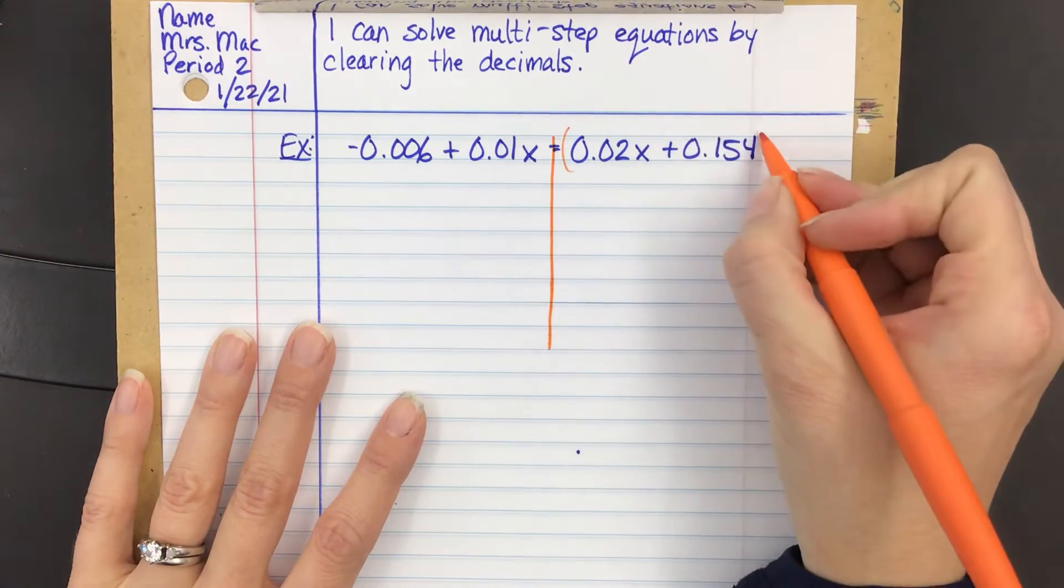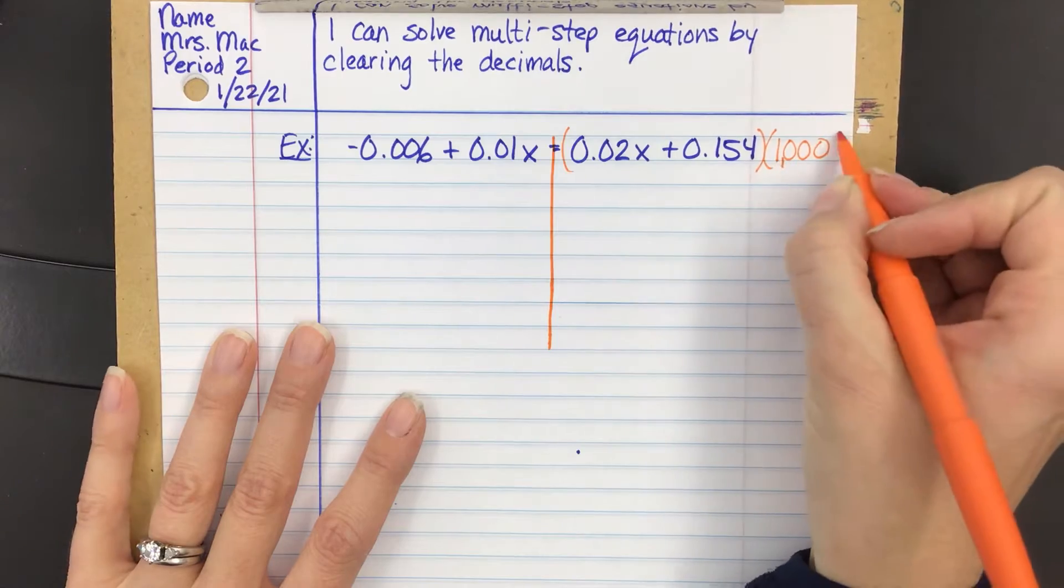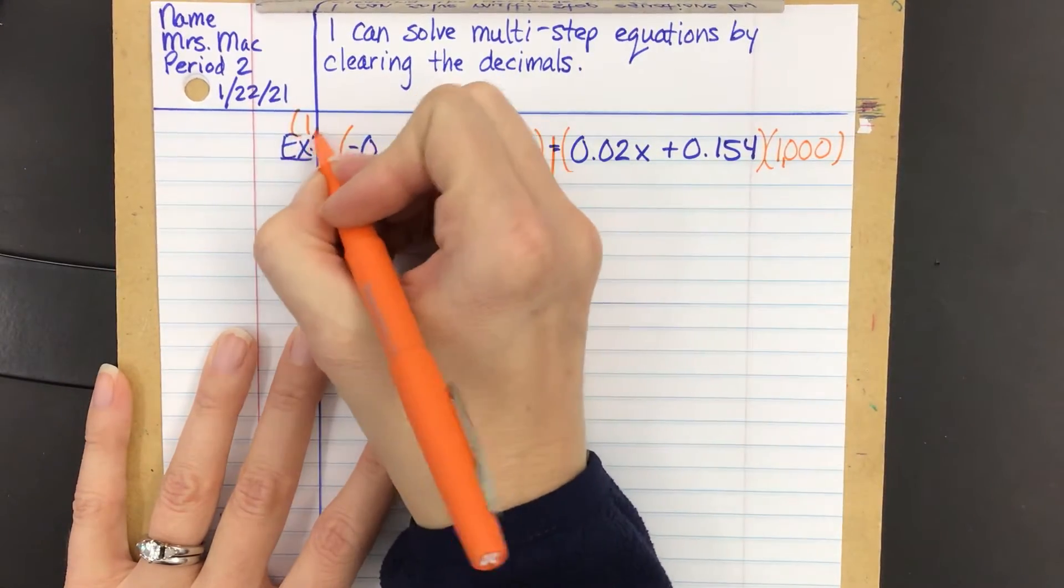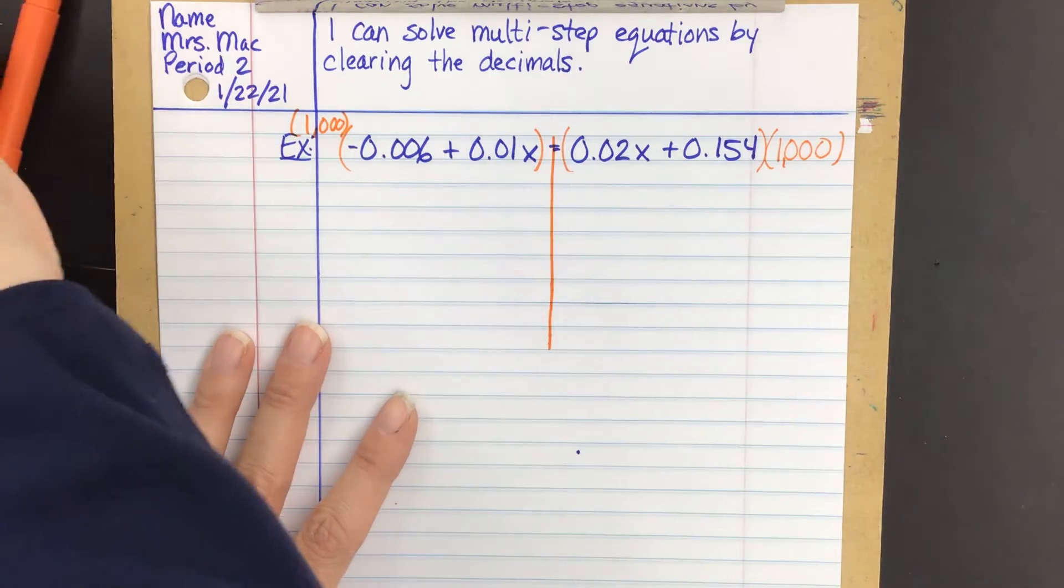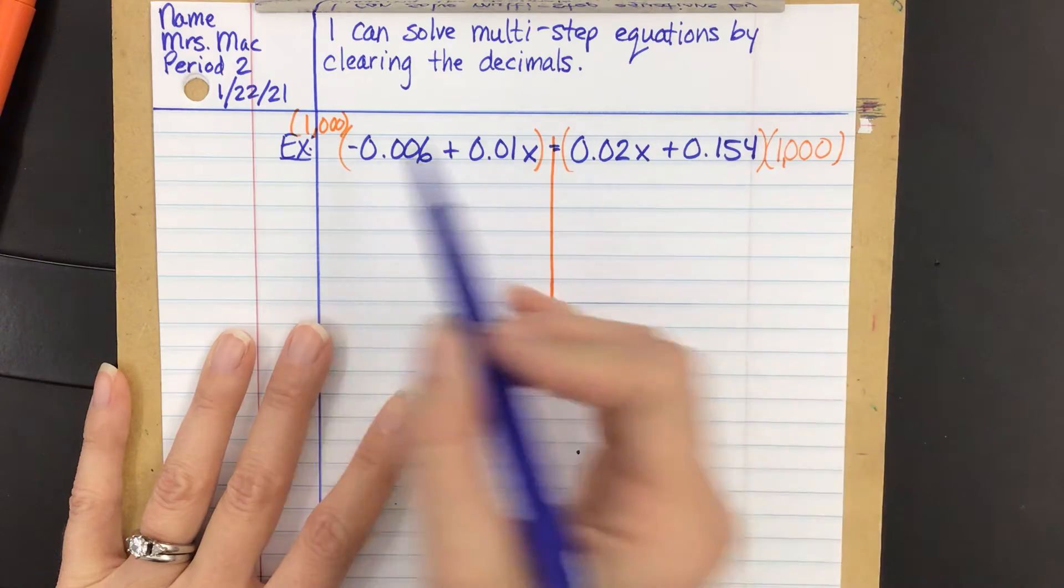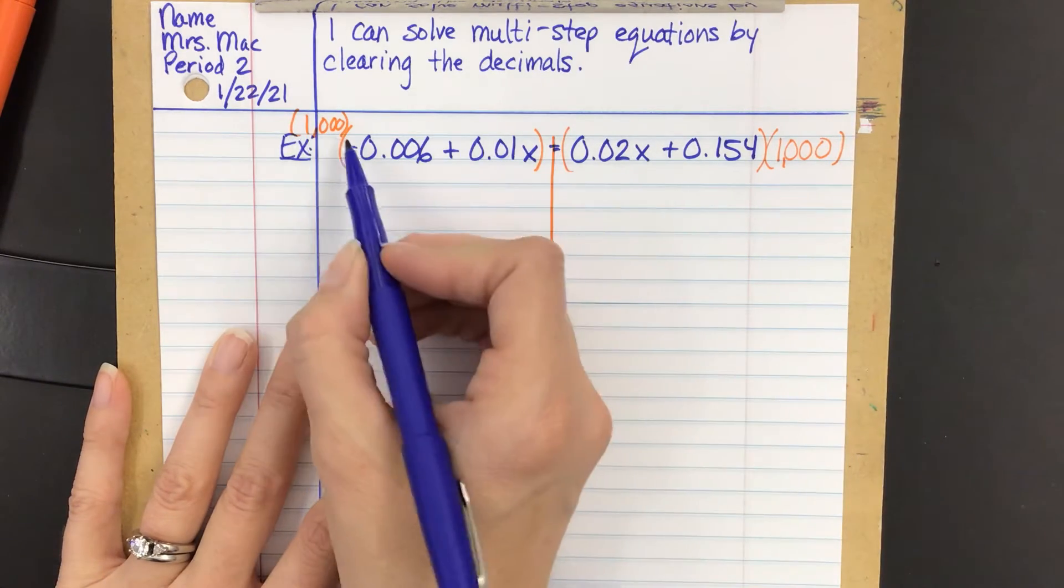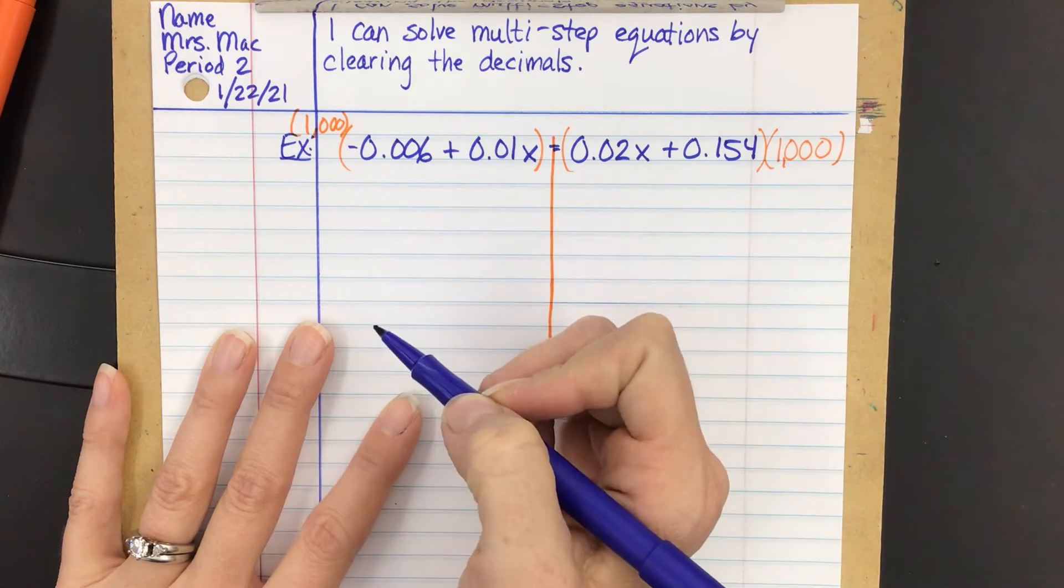I am going to multiply both sides of my equation by 1,000. And let me show you what happens when we do that. I'm going to distribute this. So really, basically, every term is going to be multiplied by 1,000 at this point. And it has three zeros, which means we're going to be moving everything over three decimal places.